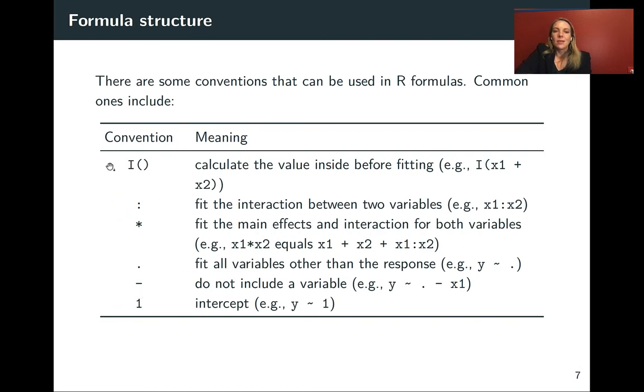We can also use things like I() if we wanted to do some operation on two of the variables before we estimate the model coefficient for them. So because the model formula includes plus to link the different independent variables, we can't use plus by itself if we really wanted to say fit one term as one variable plus another. Instead, to protect it, you have to wrap it in this I() function.